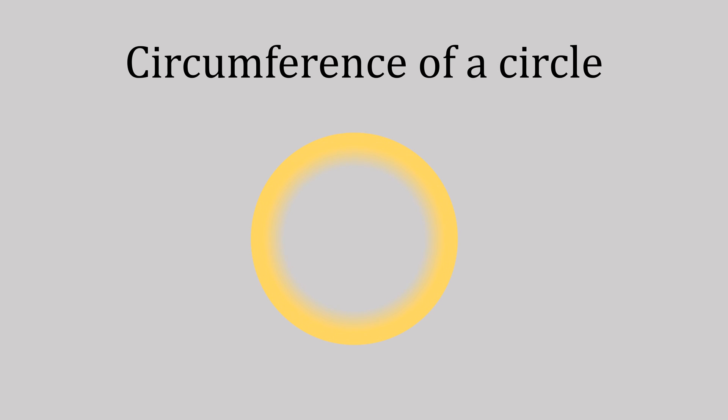Circumference of a circle. We need to know the measurement of the diameter. If we look, that's a nice line that goes across and makes a big D. So the diameter is 8.